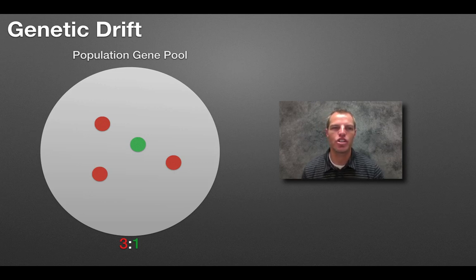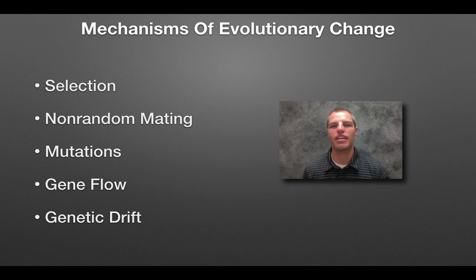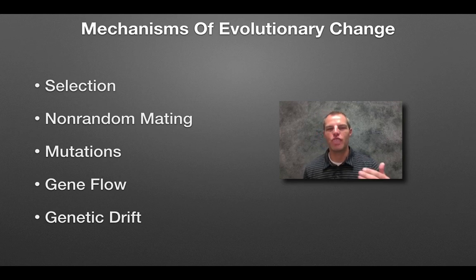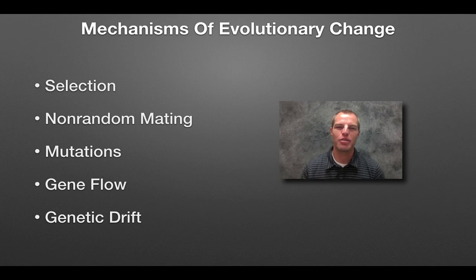So these are mechanisms that allow for evolutionary change over time — gene flow and genetic drift. The driving force really is natural selection because if genes flow into an area, it's natural selection that drives the change within that population. I'm Coach Boyston — hopefully that was helpful. You guys have a good day.